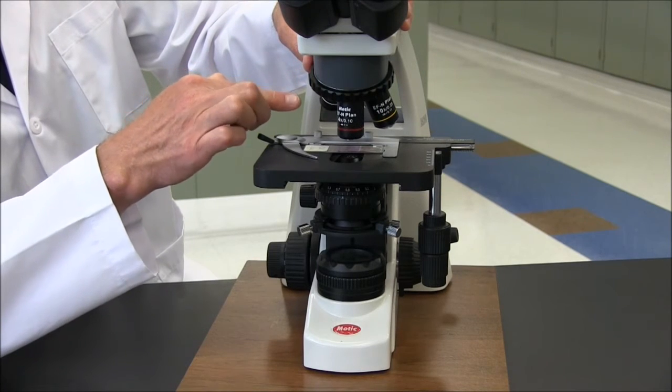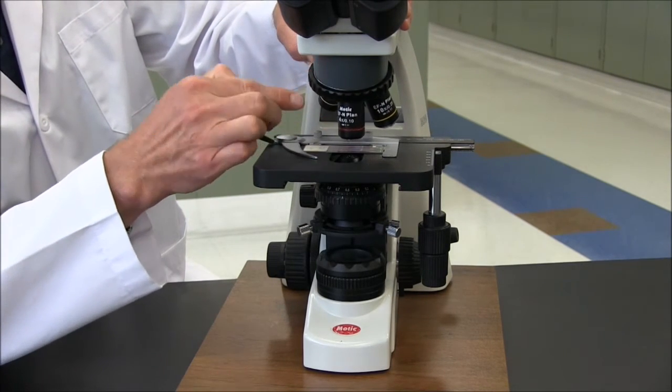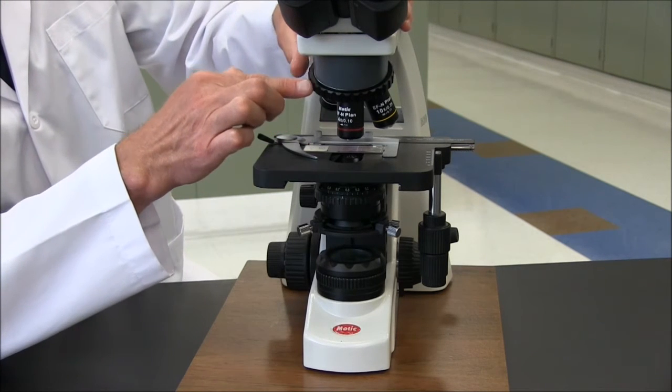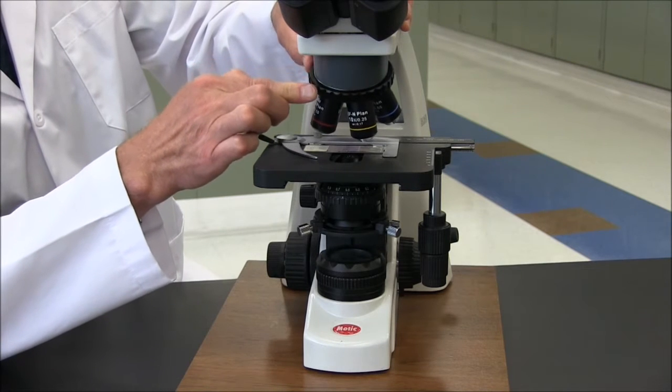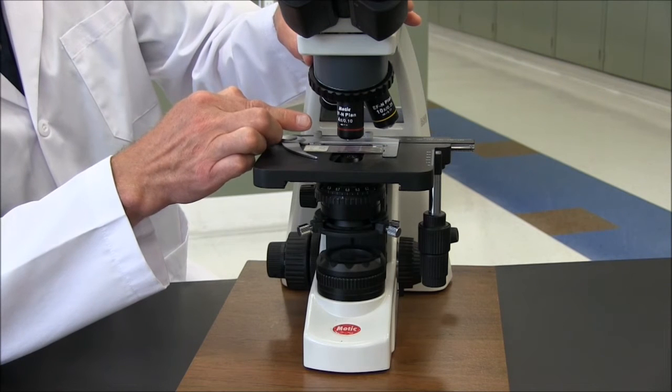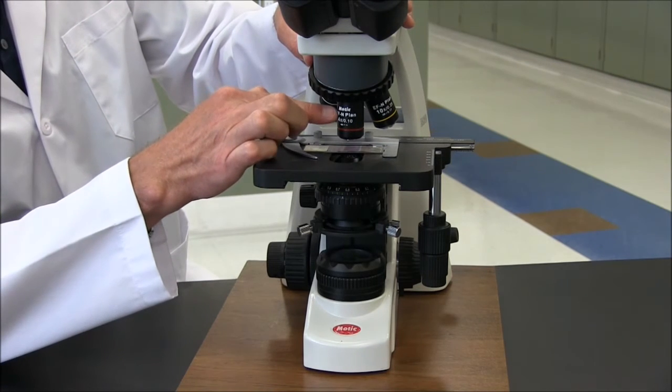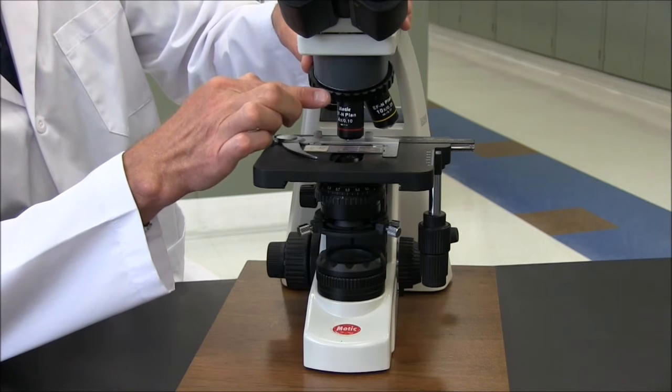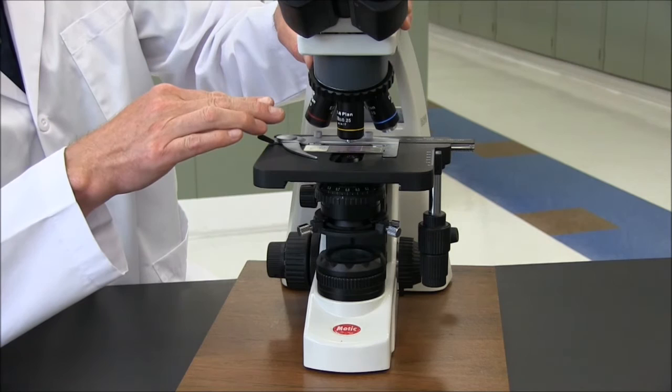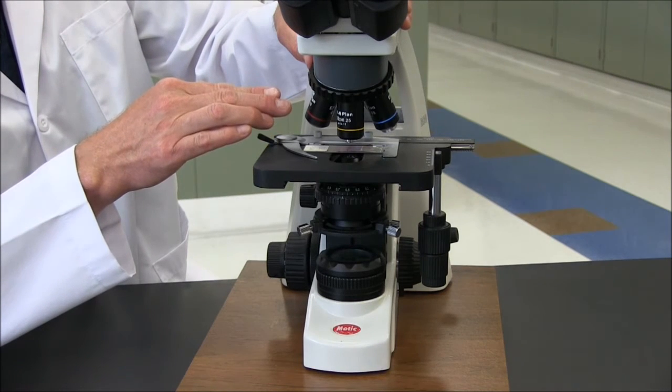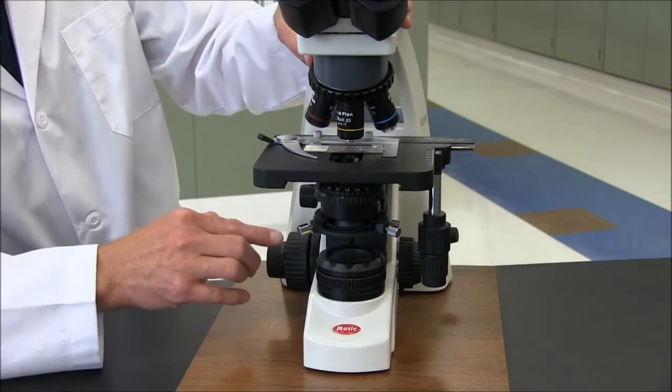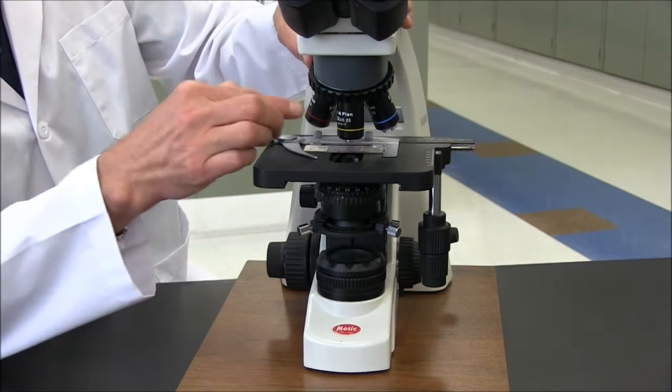When moving between objectives, you don't want to use your fingers to push on them because they may become misaligned so that the beam of light doesn't go directly up into the objective. You always want to rotate them using the revolving nose piece here. These objectives are also par-focal so that when the 4x is in focus with this slide, and you want to change to the next objective, the 10x, you don't have to lower the slide and then bring it back up into focus. As soon as you rotate the 10x objective into place, you just have to do some fine focusing and you should see the image clearly.